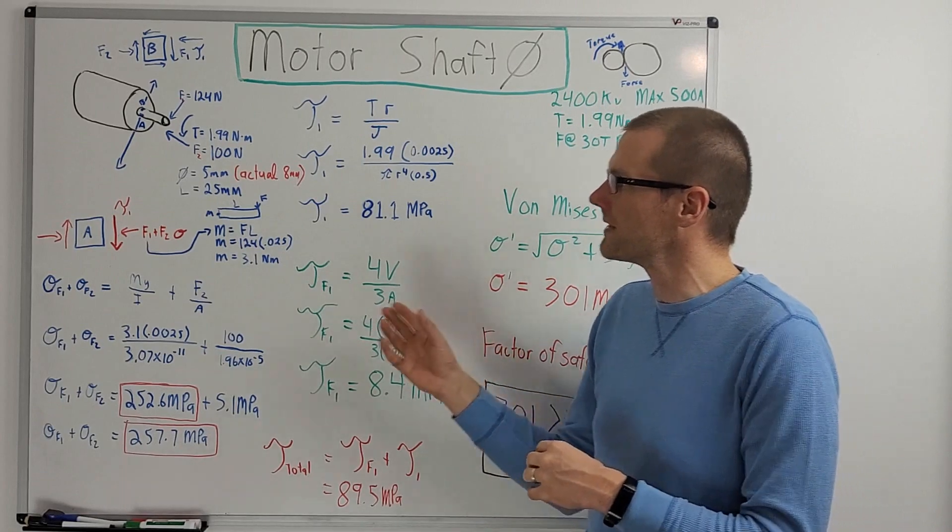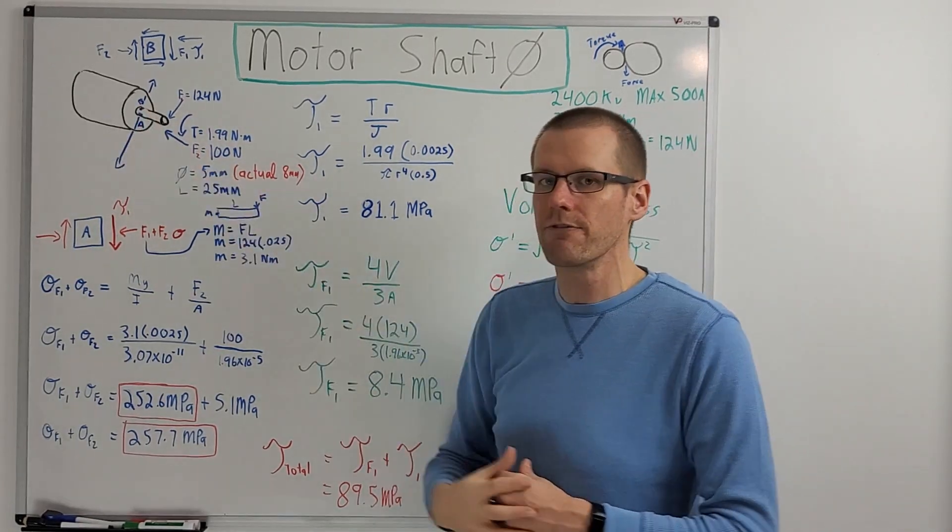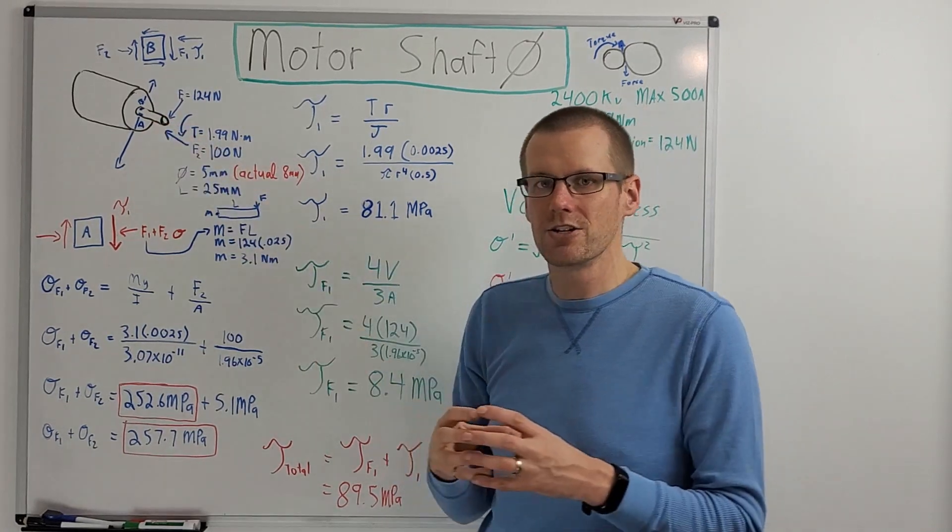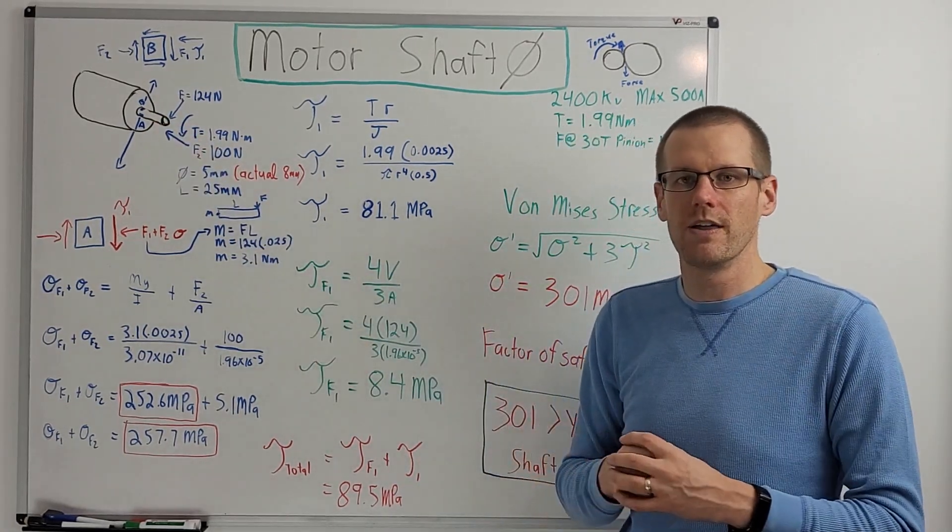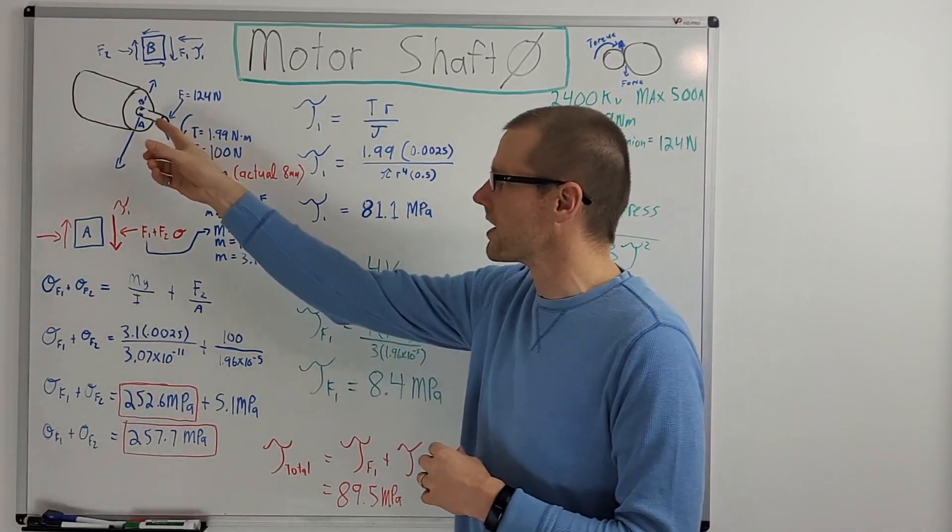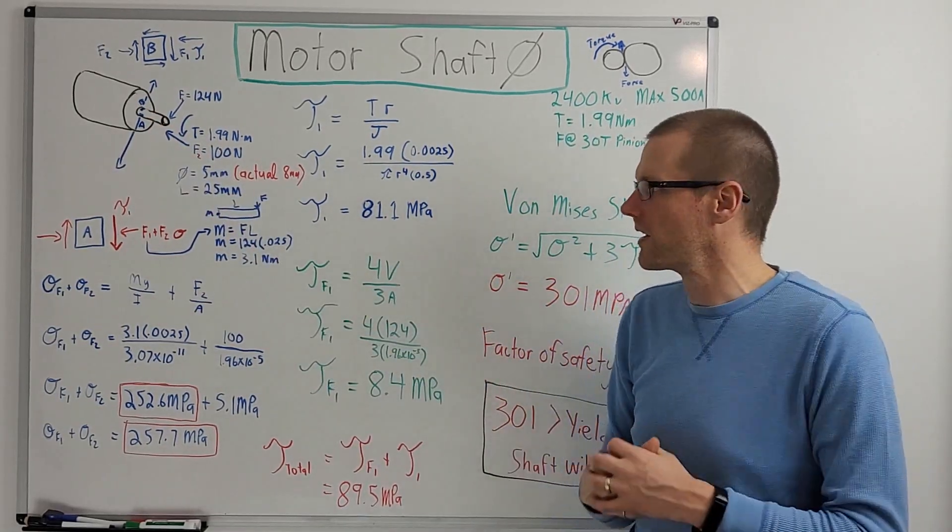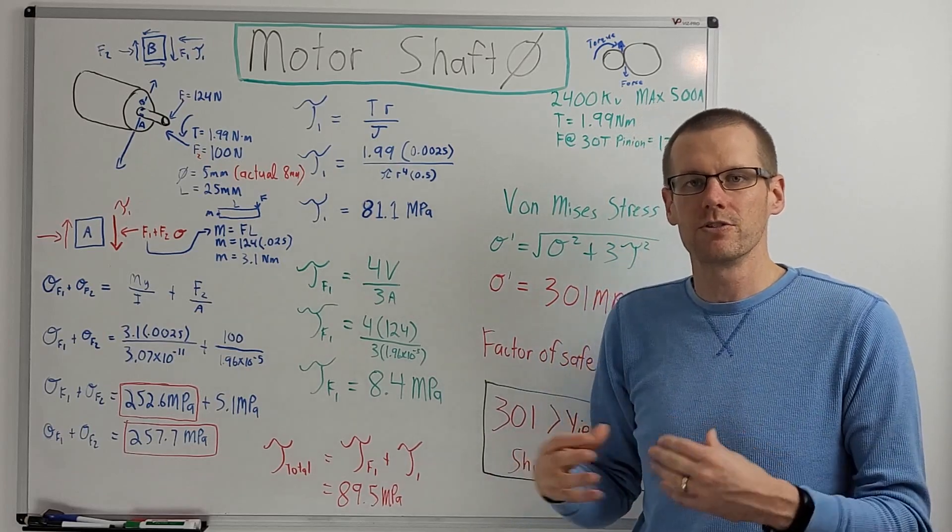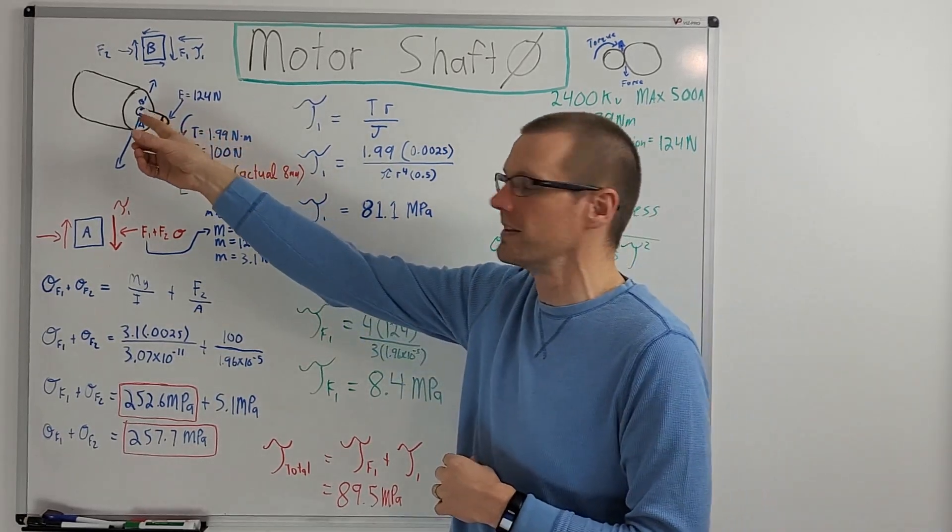We're going to go through everything here with the assumption that it's five millimeters and it's used in a radio control car application. The big question is, is that shaft now going to fail? Well, we're going to take a look at that by analyzing a couple different sections on the shaft.